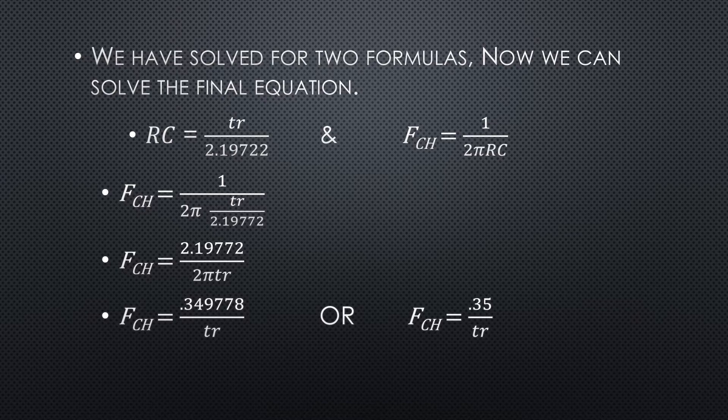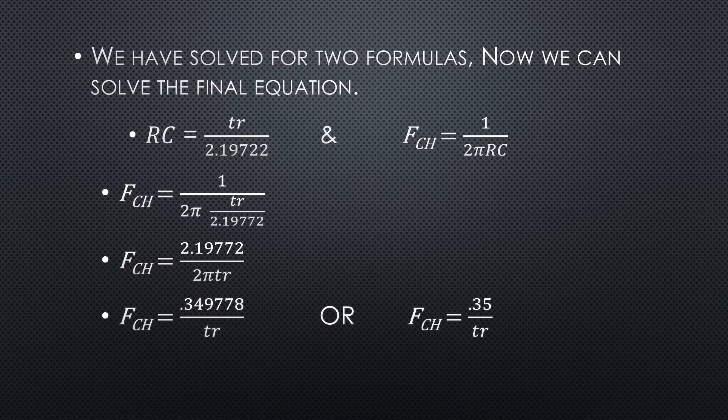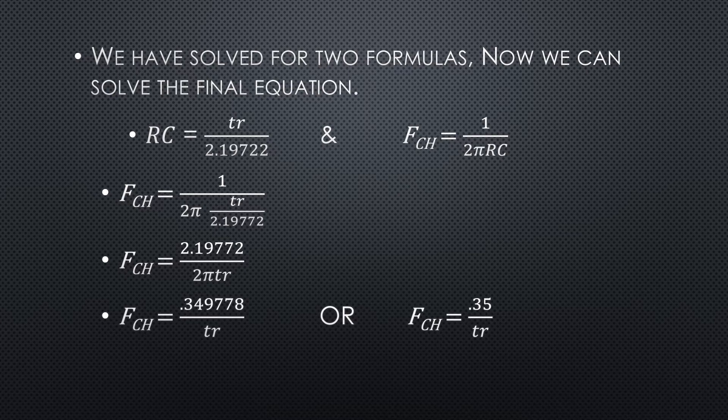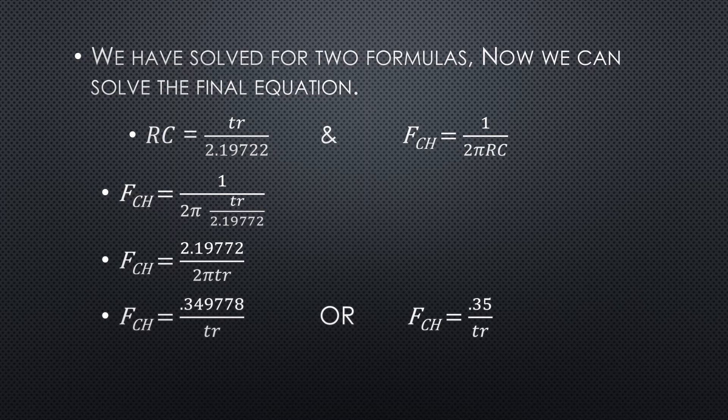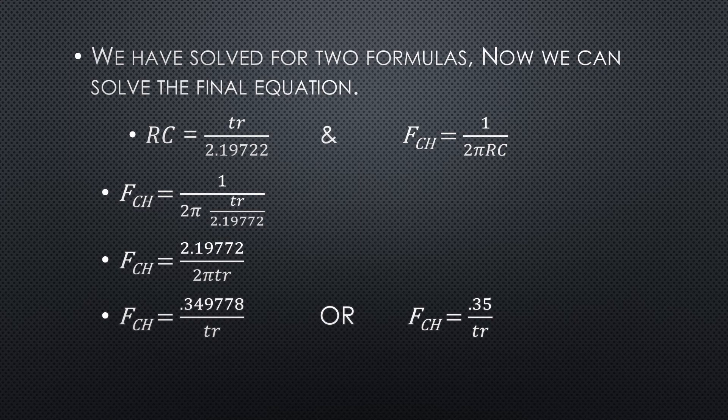We're going to combine these two formulas. In the frequency cutoff formula we'll substitute in rise time divided by 2.19772. This simplifies to 2.19772 divided by 2πtr, which gives us 0.349778 over tr, or 0.35 over tr. That's where our frequency cutoff high square wave analysis formula of 0.35 divided by rise time comes from.